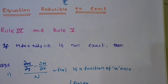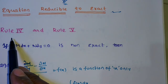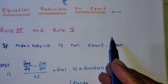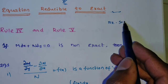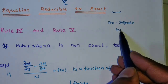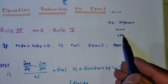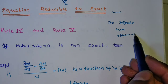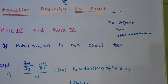Hi friends, welcome back to Team Education. In this video we are discussing equations reducible to exact — that is Rule 4 and Rule 5. In earlier videos we discussed Rule 1 (inspection method), Rule 2 (homogeneous type), and Rule 3 (y·f(xy)dx + x·g(xy)dy = 0 type).